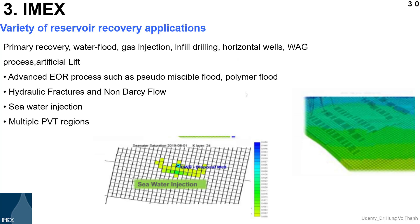Or you would like to consider the simulation scenario for horizontal wells for your field scale model — you can perform that easily in IMS simulator. Also, the other injection strategy we call water alternating gas (WAG) process can be applied easily in IMS. Or even the artificial lift design can be included in the IMS simulator.